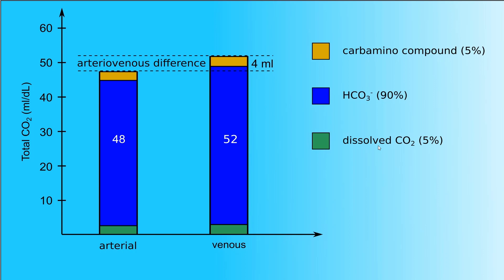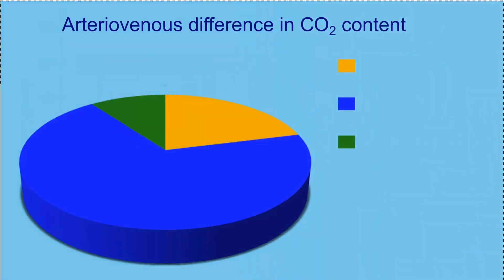The difference between the two values, four milliliters, is the arteriovenous difference. In other words, during systemic circulation, each deciliter of blood takes up four milliliters of CO2 from tissues. We will call this amount the incremental volume. The incremental volume is also transported in the three forms described above. However, their percentage is very different: the carbamino compound makes up 21%, bicarbonate ion 69%, and dissolved CO2 10%.